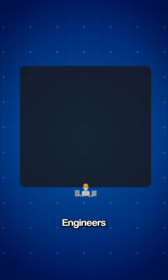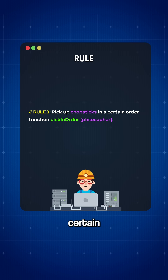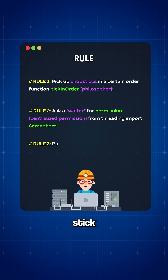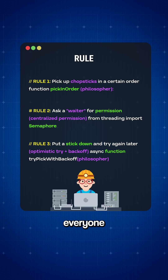So how do we prevent this from happening? Engineers use rules like: only pick up chopsticks in a certain order, ask a waiter for permission, or put a stick down and try again later. These rules keep everyone moving fairly.